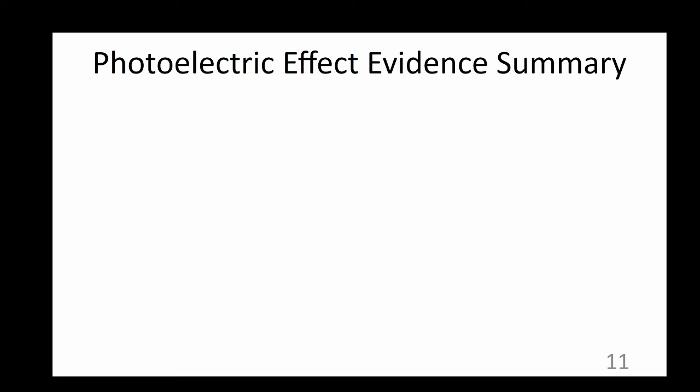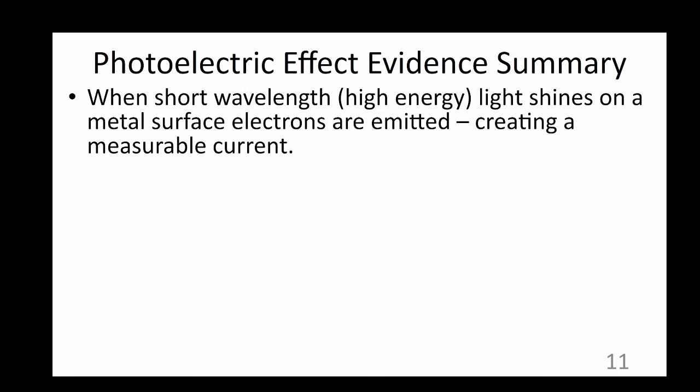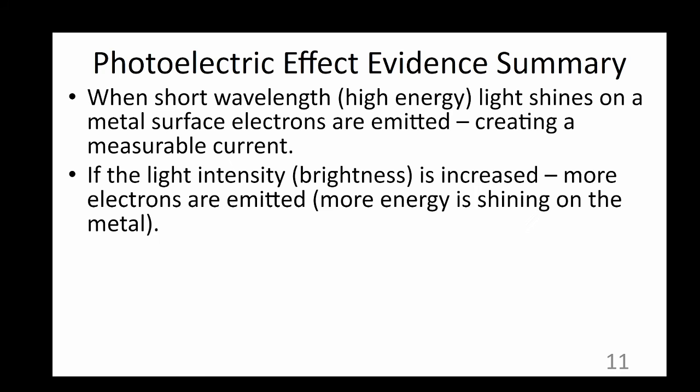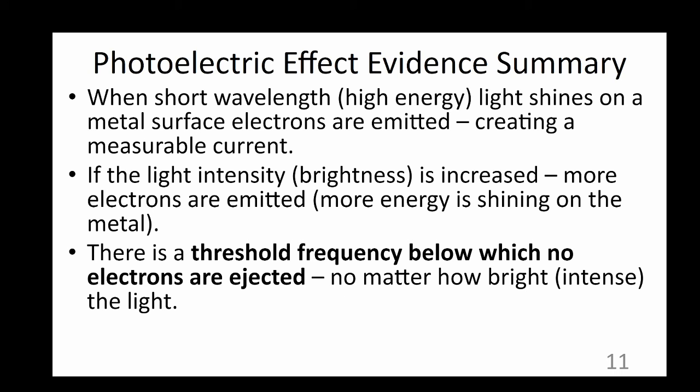Let's summarize. The photoelectric effect provides us with evidence that light is a particle. When high energy light shines on a metal surface, electrons are emitted. If the intensity of the light is increased, more electrons are emitted, but they don't move any faster. Below the threshold frequency, light does not have enough energy to remove an electron from an atom, even if we increase the intensity.